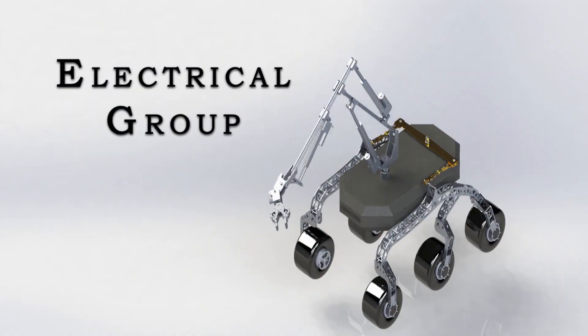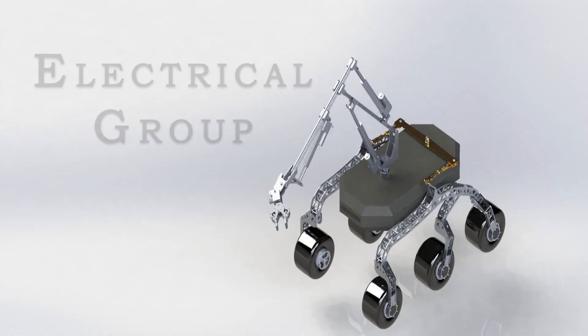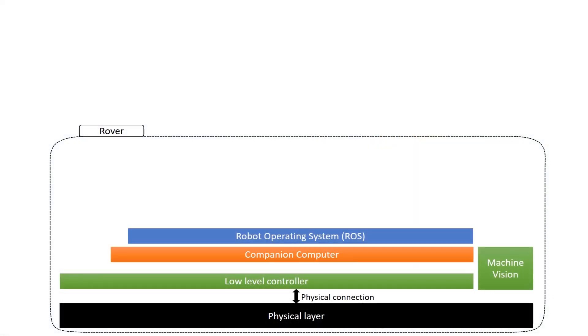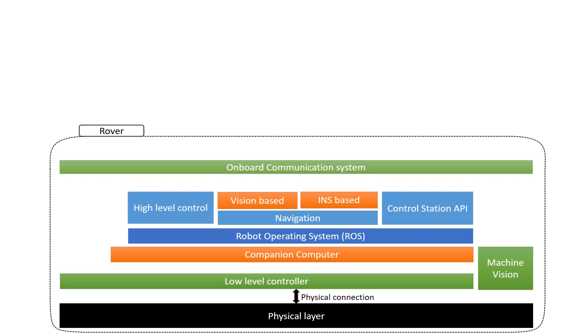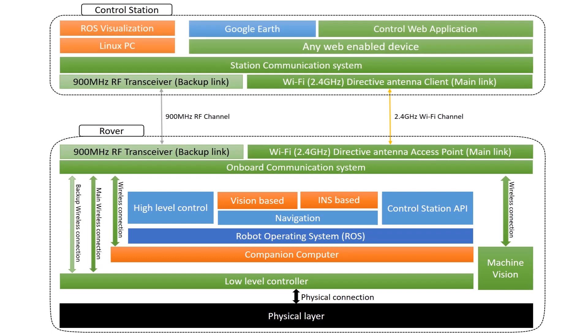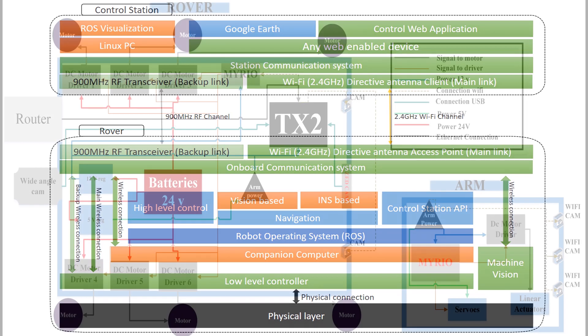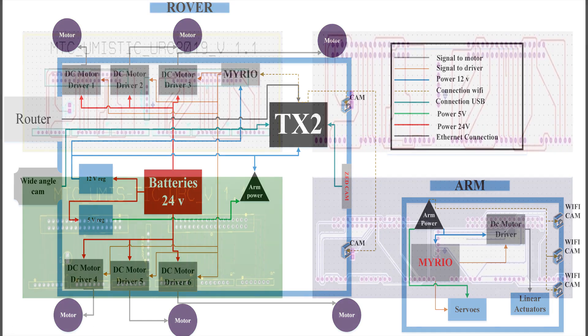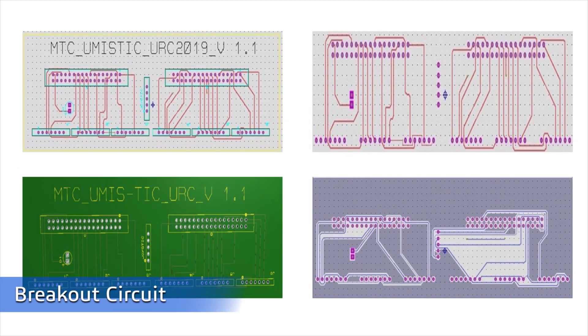Rover control system consists of two main subsystems: low level controller which is connected directly to the physical layer, and high level control which handles navigation and path planning, while ROS integrates the two subsystems. For system wiring, high power is separated from the low power for the safety of the system. A PCB is used to connect between the microcontroller and motor drivers.